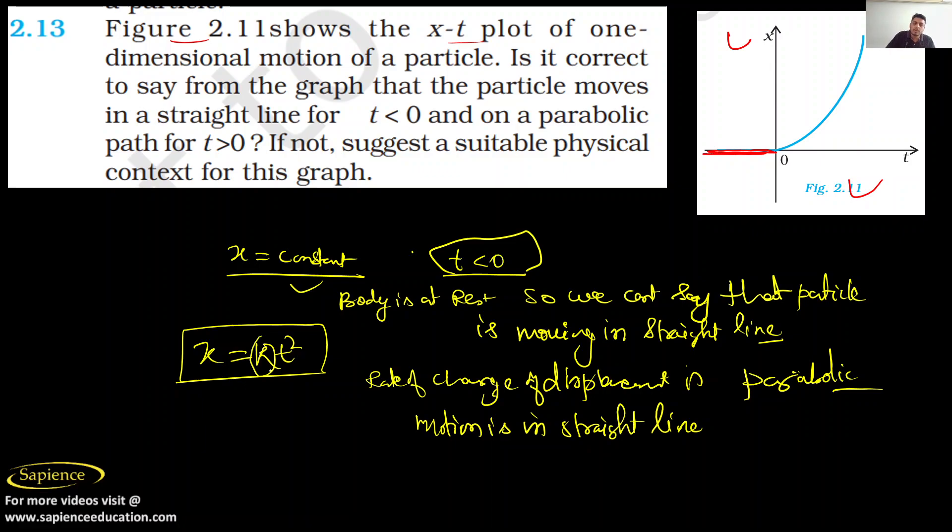x equals kt square, so it is only time dependent and no y-axis is there. So if your motion would be 2D or parabolic, there would be x and y axes as well. Here they are using only x, so it means that motion is in one dimension. So I hope you have understood this. Thank you.